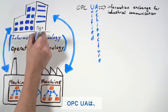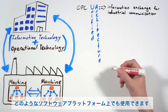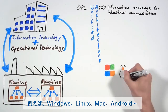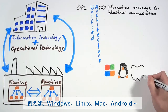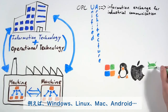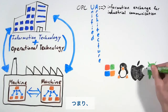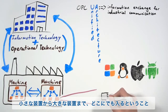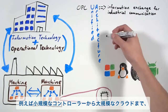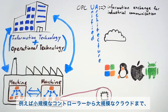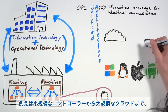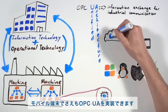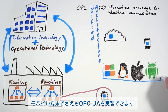It can be used with any software platform — Windows, Linux, Mac, Android — you get the picture. And this makes OPC UA scalable, from minimal embedded controllers to massive cloud infrastructures, even mobile devices.